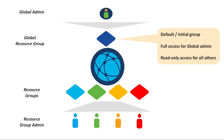The global resource group is the default resource group. Initially, all users and resources are part of this resource group. Users within this group — that is, the global admin — have full access to all resources. All other users have read-only access to resources in this group. The system default user admin is always in this group, and all users and resources belong to exactly one resource group.